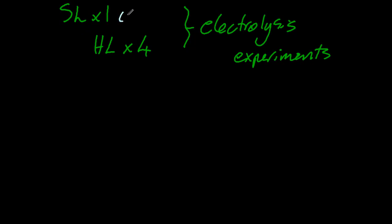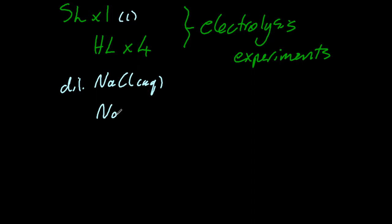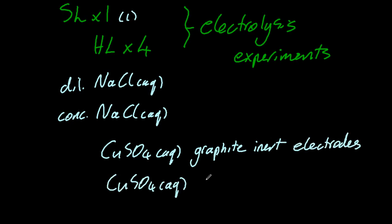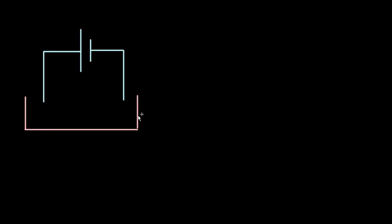The SL type is just liquid electrolysis. For HL, you need to know dilute and concentrated sodium chloride, copper sulfate with graphite electrodes which are inert, and copper sulfate with copper electrodes which are not inert. But other ones you can work out if you understand these.